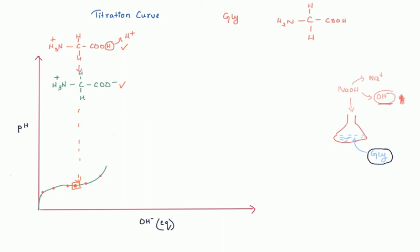At that midpoint, we have equal amounts of the fully protonated form with COOH and the form with COO⁻. As we keep increasing the pH and OH⁻, the curve has a steep rise and then flattens again. The fully protonated form is continuously converted into the COO⁻ form until none of the fully protonated glycine remains and only the COO⁻ form is present.